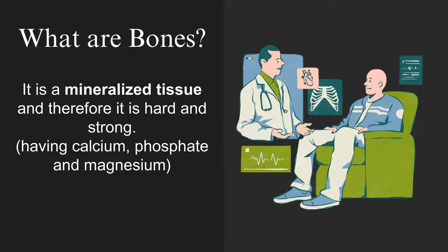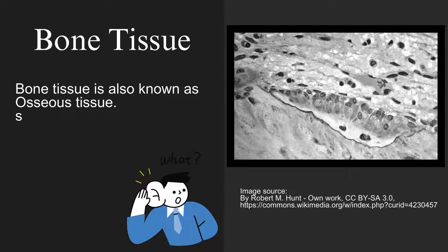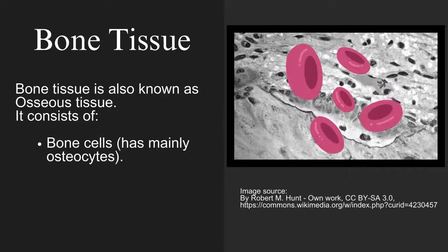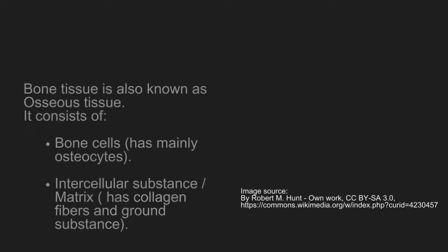What is a bone tissue? Bone tissue is also known as osseous tissue. It consists of bone cells that are mainly osteocytes. Intercellular substance, also known as matrix, has collagen fibers and ground substance.